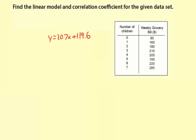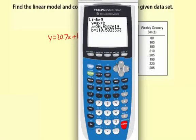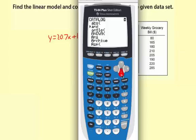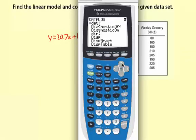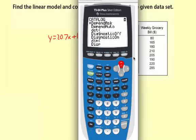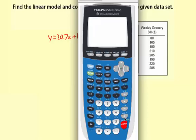Correlation coefficient. The calculator didn't show that. I need to turn on the diagnostic for that. That's the catalog. I'm going to hit second and then zero, which is the catalog. Then I have to scroll down to find diagnostic on. I'm going to turn that on. There it is. Diagnostic on. Enter. Enter. Then enter one more time. The calculator says it's done, so it should be good to go.